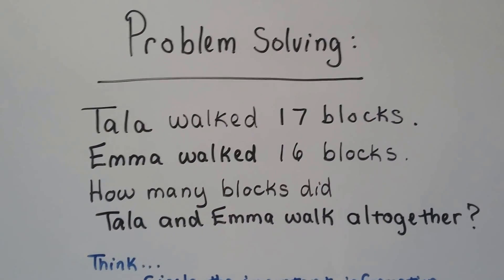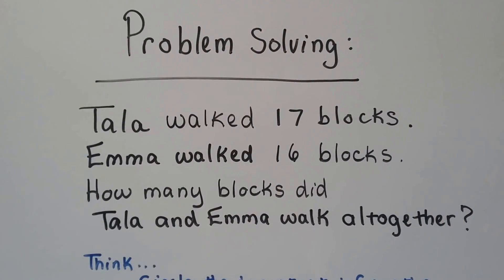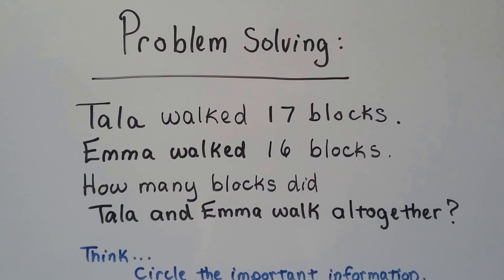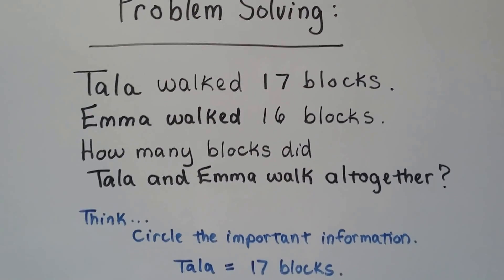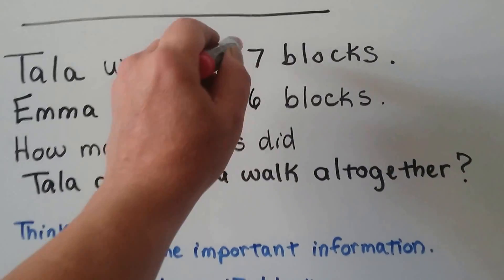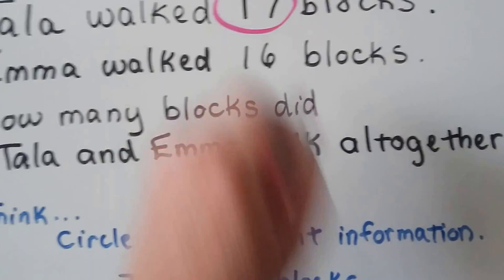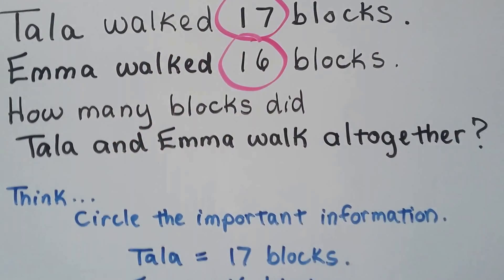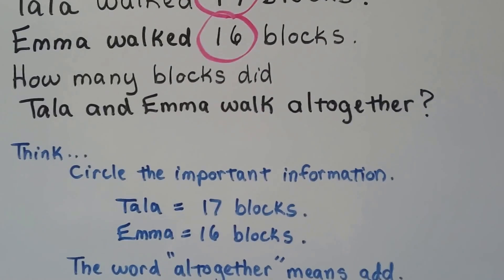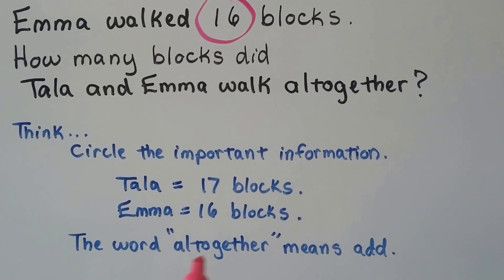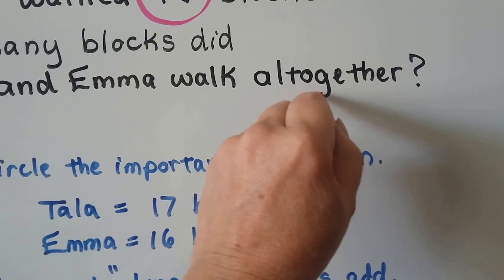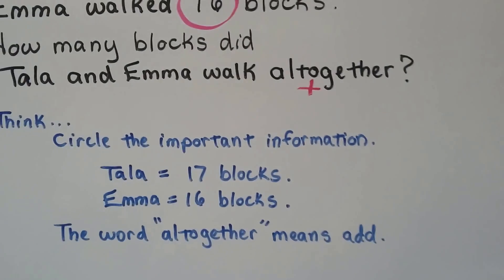Tala walked 17 blocks. Emma walked 16 blocks. How many blocks did Tala and Emma walk all together? So we think, we need to circle the important information. So Tala was 17, Emma was 16. And it says, how many blocks did Tala and Emma walk all together? And the word all together means add. We're putting them all together. So this is an addition sentence we're going to make, or an equation. An addition equation.